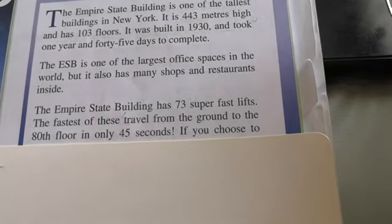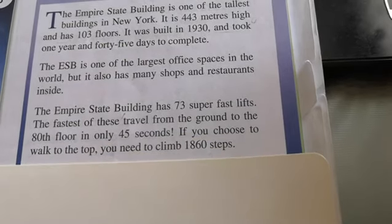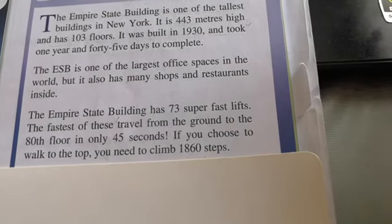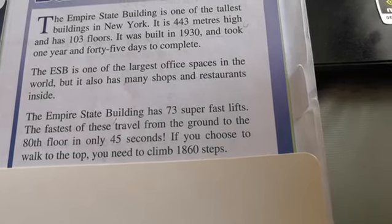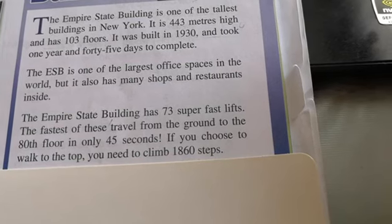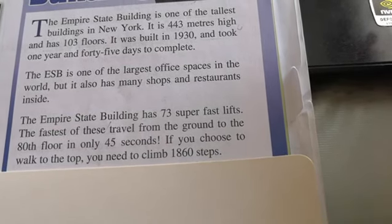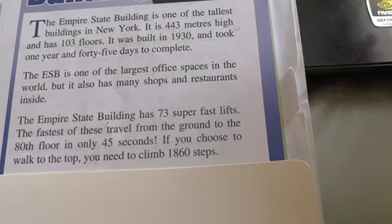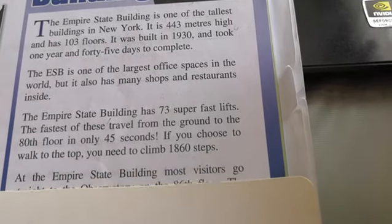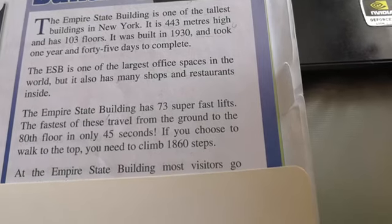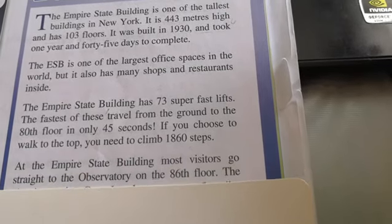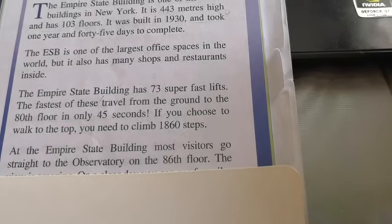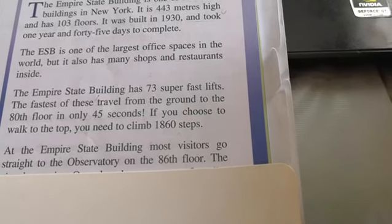The fastest of these travel from the ground to the 80th floor in only 45 seconds. If you choose to walk to the top, you need to climb 1,460 steps. At the Empire State Building, most visitors go straight to the observatory on the 86th floor.